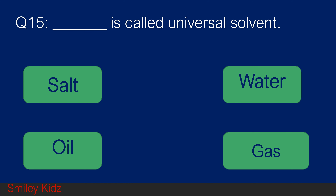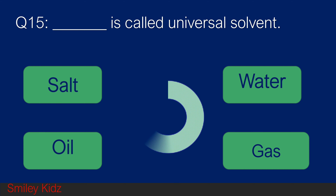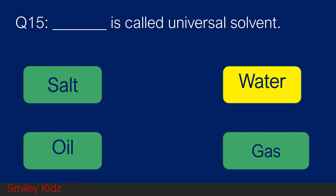Question number 15. Blank is called the universal solvent. Option A salt, option B water, option C oil, and option D gas. Your time starts now. And your time is up. The right answer is water. Water is called the universal solvent.